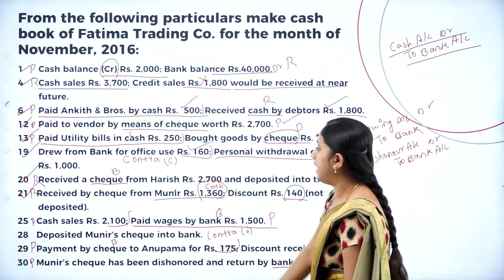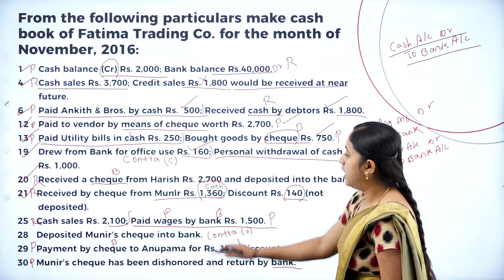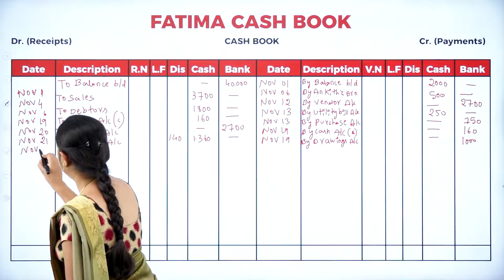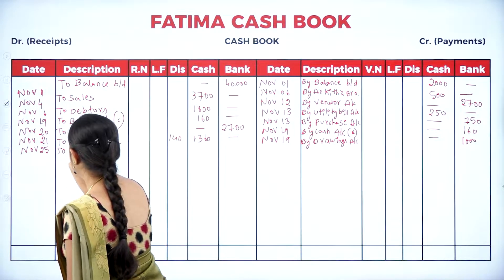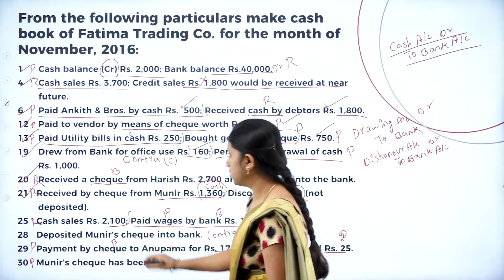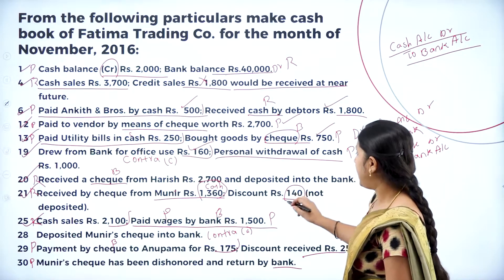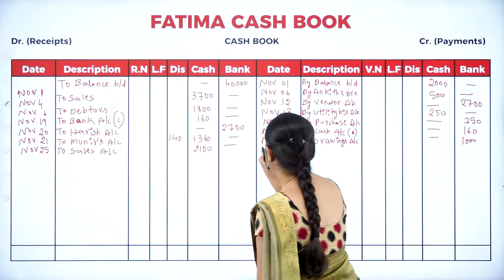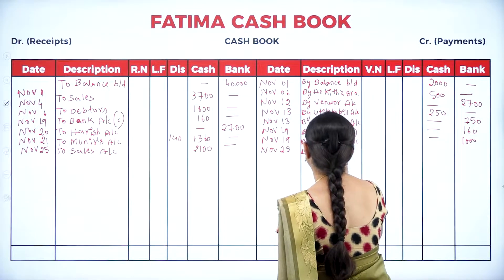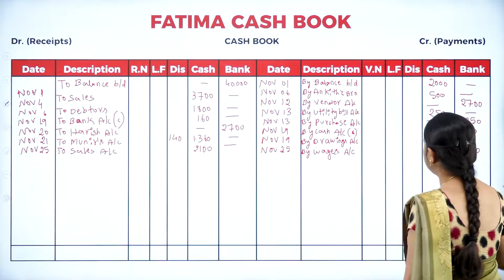November 25th: to sales account, cash column 2100 (cash sales, receipt side). November 25th: by wages account, bank column 1500 (payment by bank).